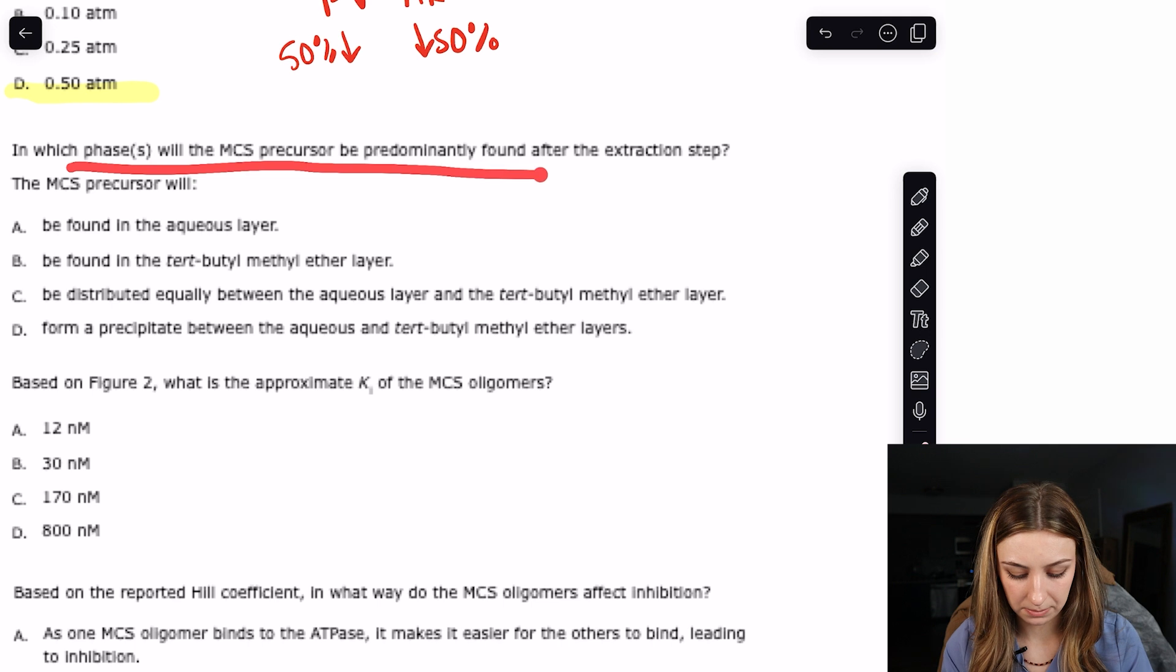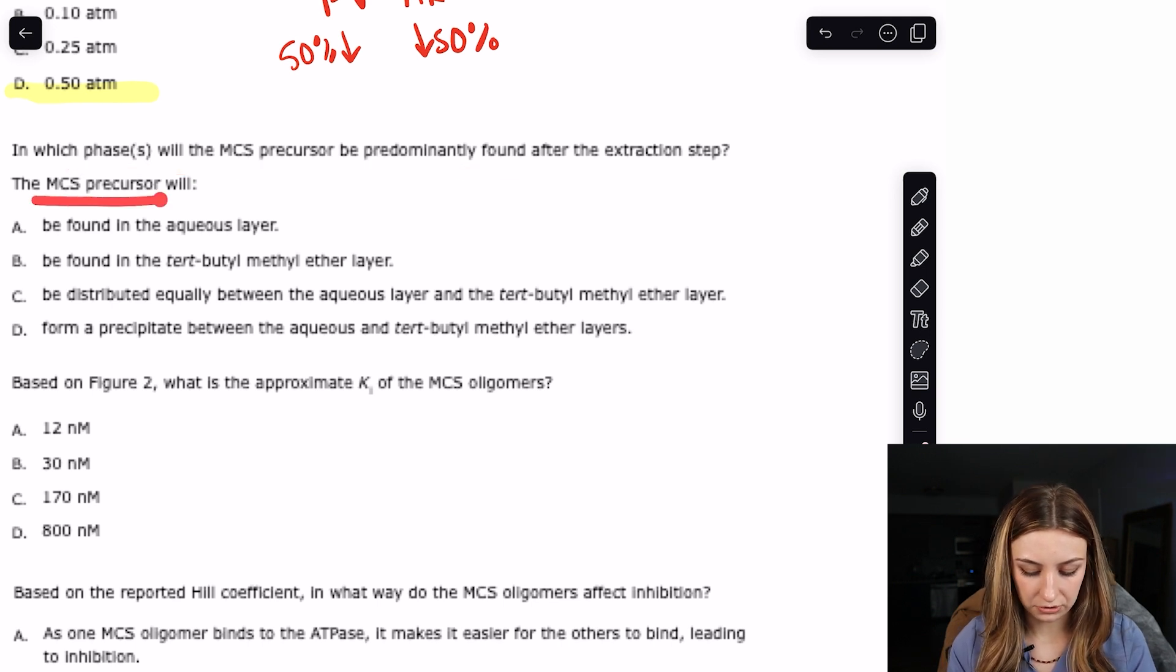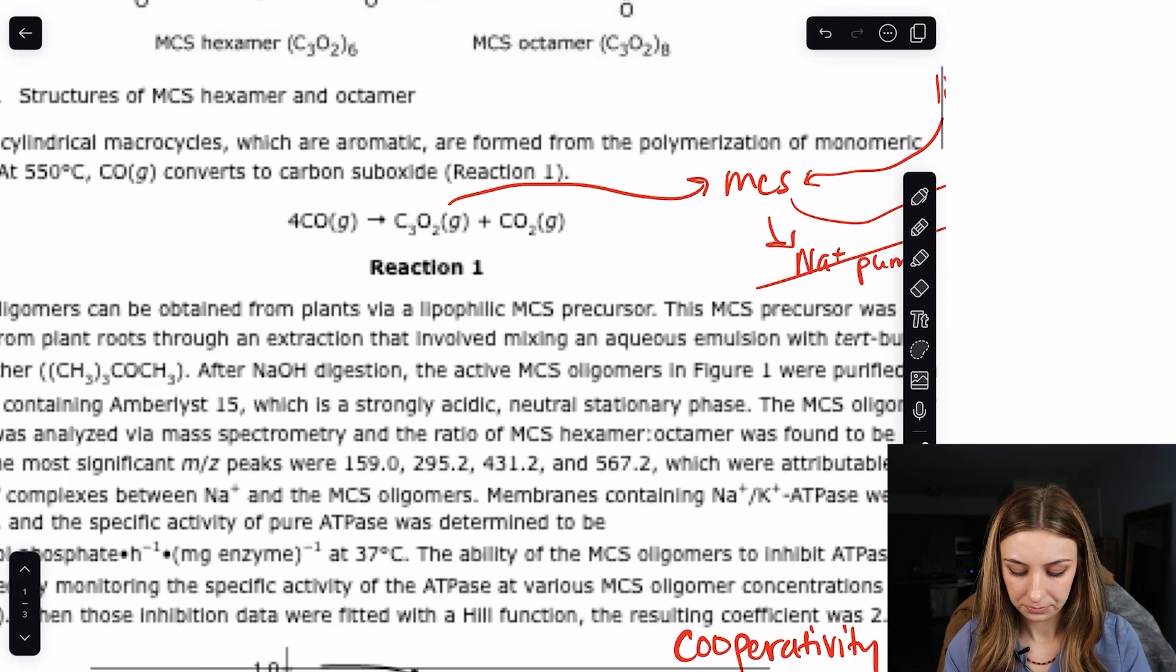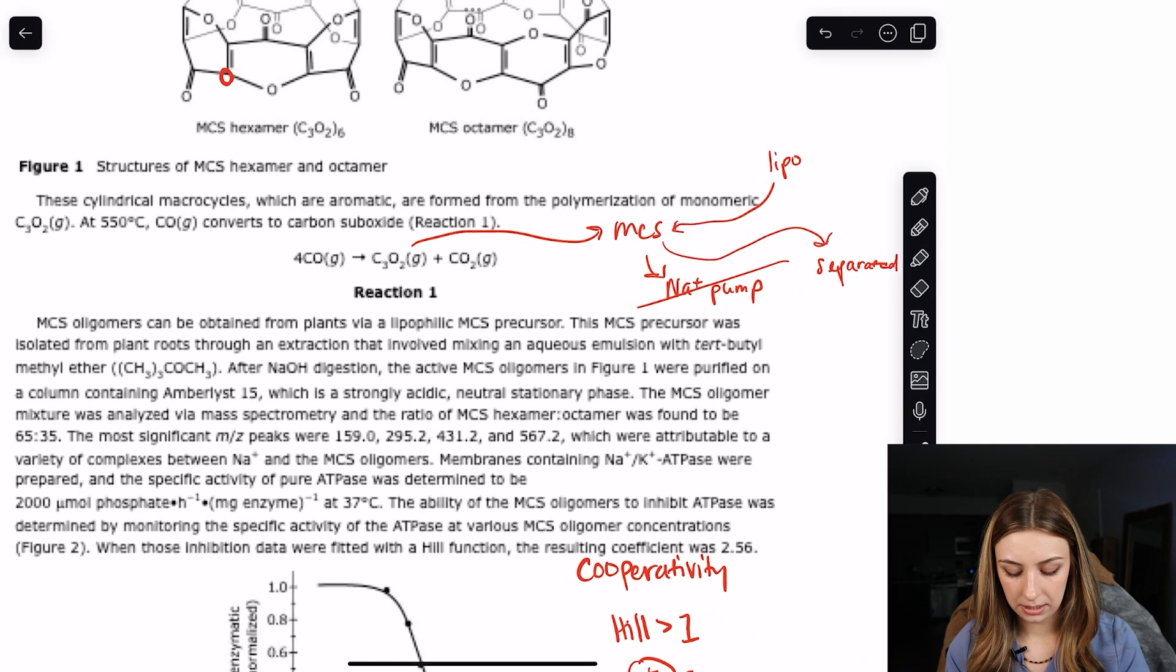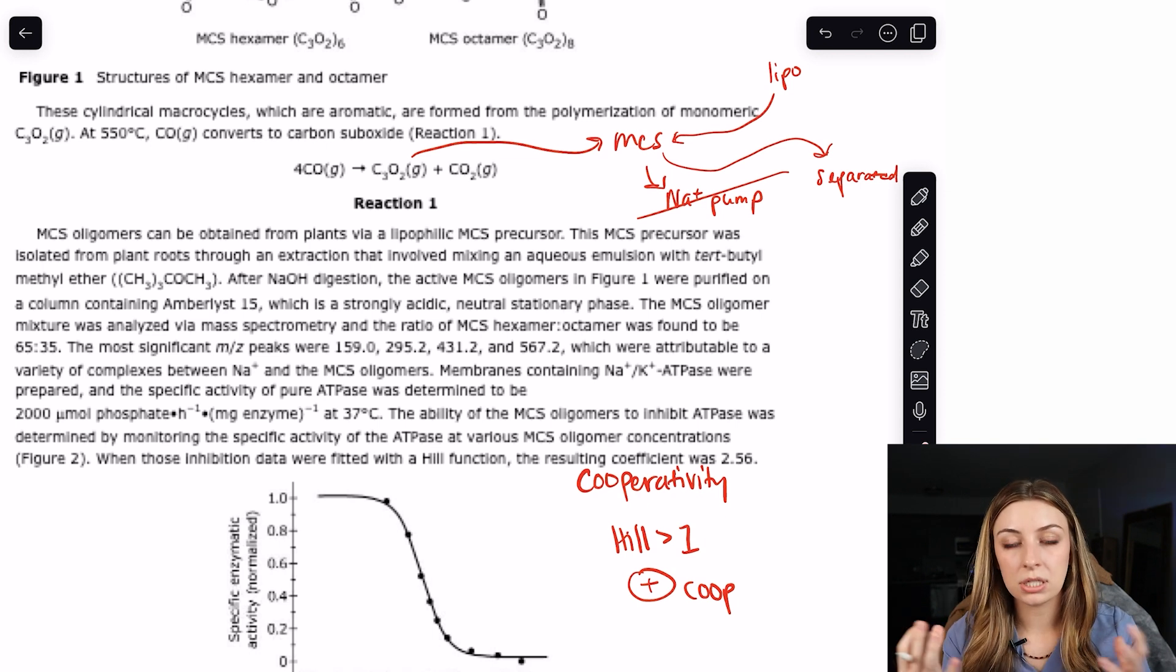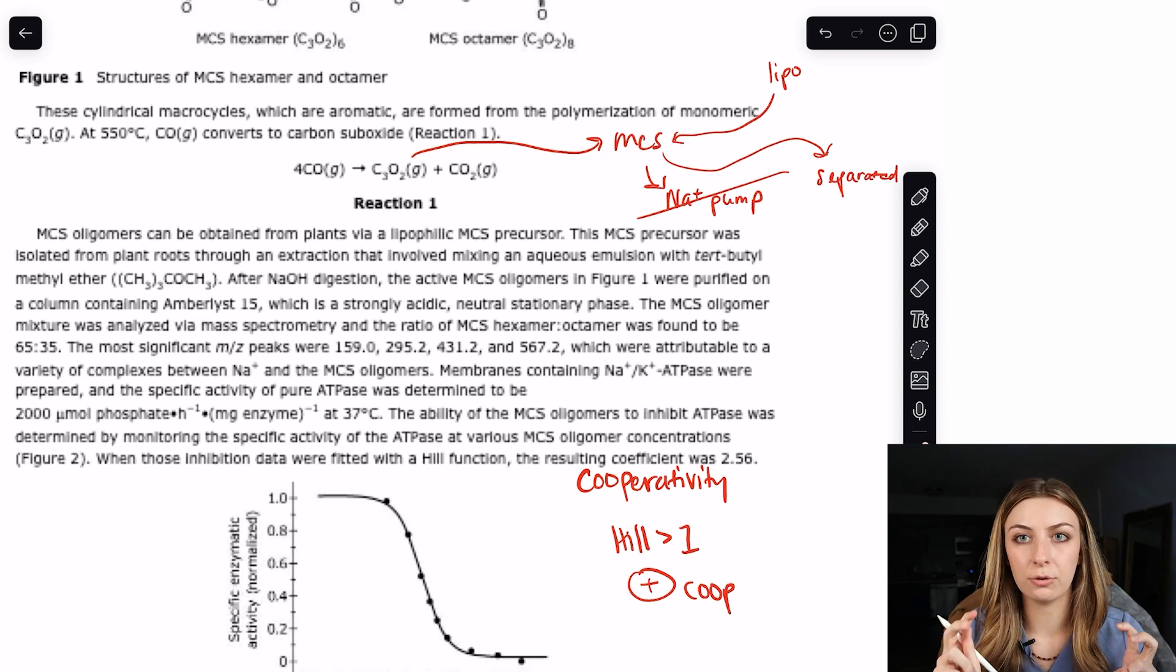The next question says, in which phases will the MCS precursor be predominantly found after the extraction step? I'm going to go back up to the passage and to my flow chart. I know that the MCS precursor was lipophilic, but I don't exactly remember the extraction process. So it was isolated from plant roots through an extraction that involved mixing an aqueous emulsion with tert-butyl methyl ether. So lipophilic, what's our solubility rules? Like dissolves like. So where is a lipophilic substrate? If I mix it with an aqueous solution and some ether, where's it going to go? It's going to the lipophilic. The lipophilic is going to go to the lipophilic.